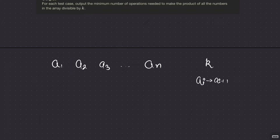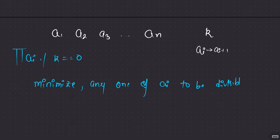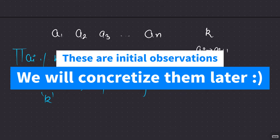I want the product of all ai to be divisible by k, meaning product mod k equals 0. If any one of them is divisible by k, the job is done. To minimize operations, just make any one of the ai divisible by k — that will consume the minimum number of operations. Why go and increment multiple numbers? Just focus on one element and the job will be done.